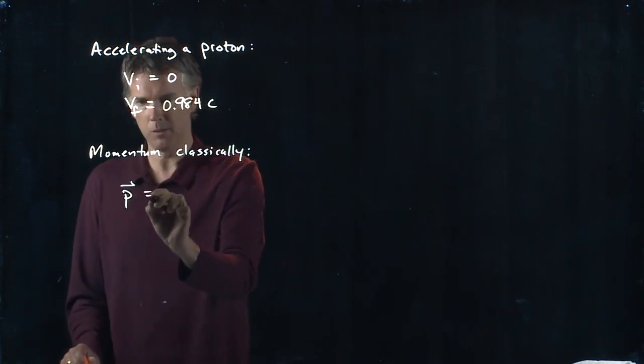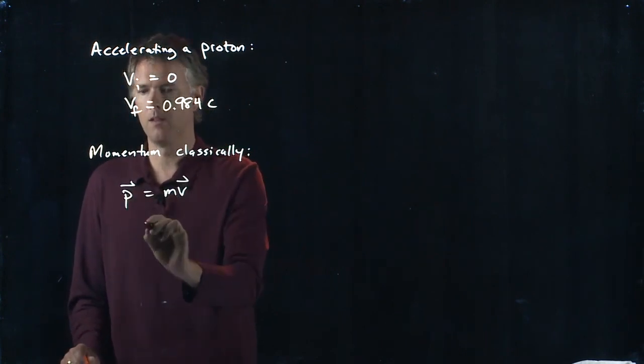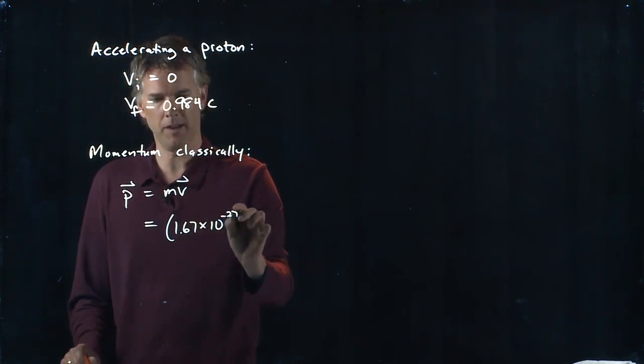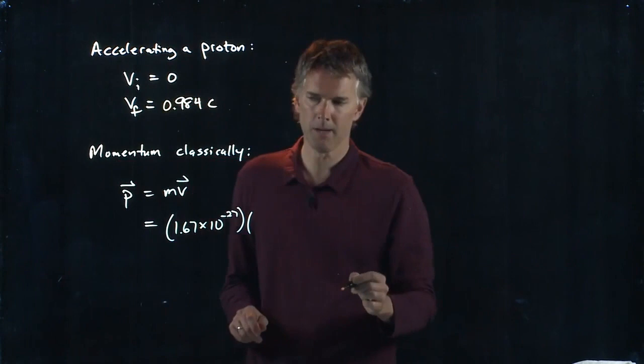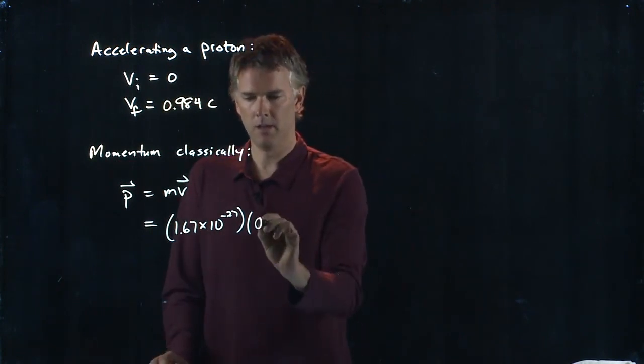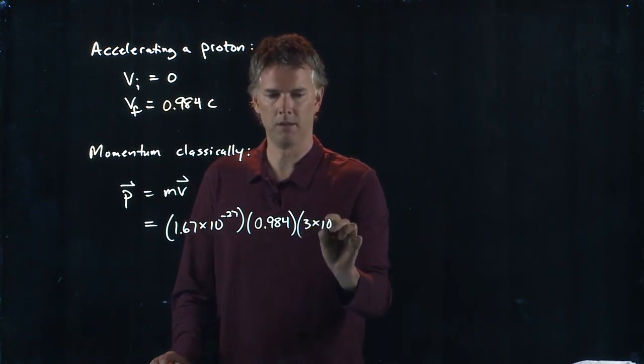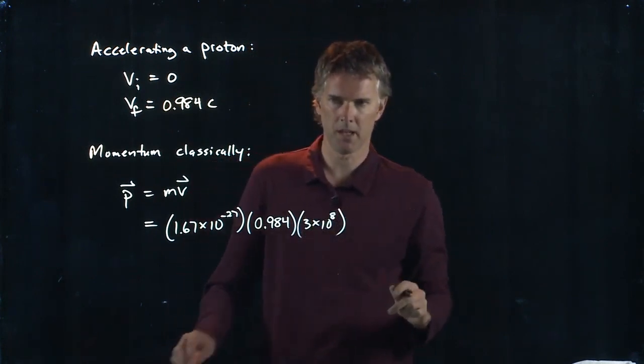Classically, P is equal to MV. And so it's the mass of the proton, 1.67 times 10 to the minus 27, times this V, 0.984 times C, 3 times 10 to the eighth.